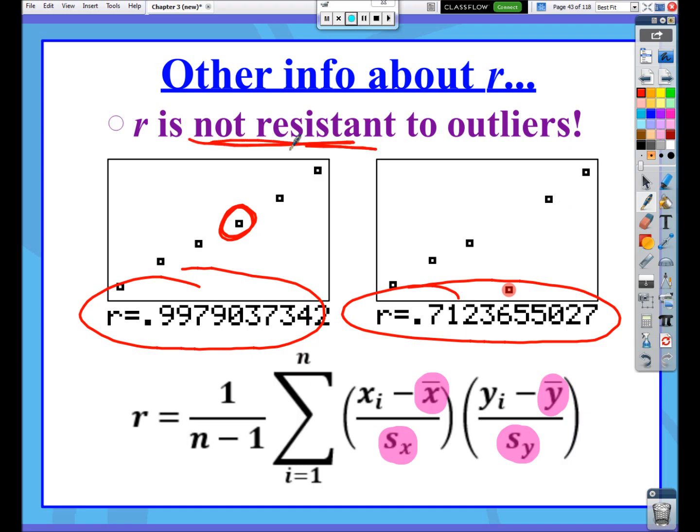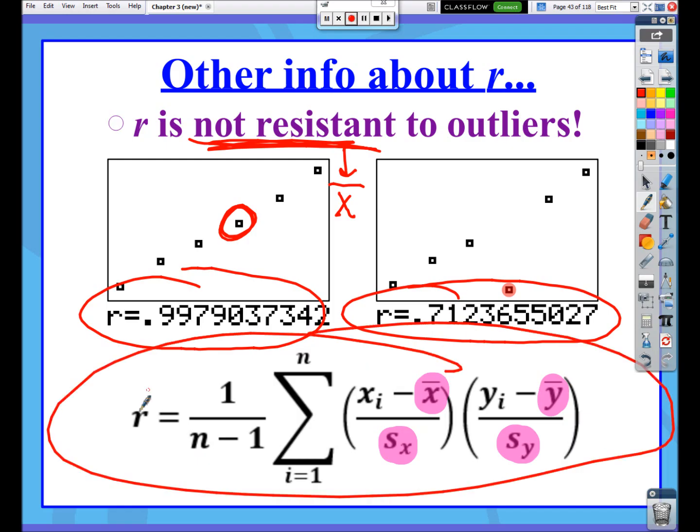And the reason why it's not resistant to outliers is because, if you think about chapter 1 when we talked about resistance, we said the mean was not resistant to outliers. The medians were resistant to outliers. So if the means are not resistant, and here is the big O formula for correlation, notice what's inside this formula, our means. And so since means are not resistant, then therefore so is correlation.